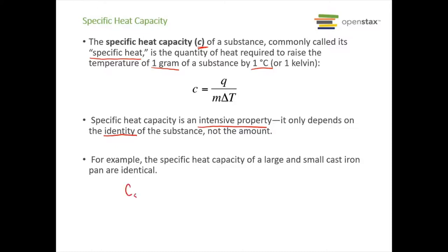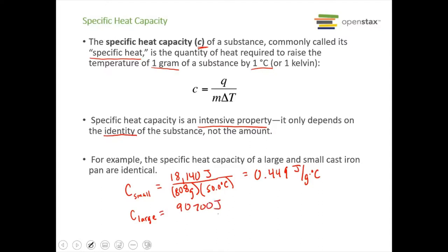For example, let's calculate the specific heat of the small pan. The q was 18,140 joules and that pan weighs 808 grams and 50 degrees Celsius for our change in temperature. This comes out to 0.449 joules per gram degree Celsius. The specific heat for our large pan, we had 90,700 joules, it weighs 4040 grams, delta T is 50 degrees Celsius again. And again we see specific heat of 0.449 joules per gram degree Celsius. Same value. They have the same specific heat capacity.